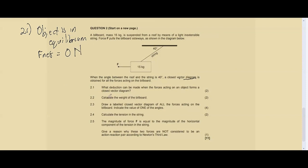Question 2.2 says calculate the weight of the billboard. The formula to calculate weight is W equals mass times gravitational acceleration. Our mass is 15 kg, multiply that by 9.8, which gives us 147 newtons. Always note that you have to include the SI unit.